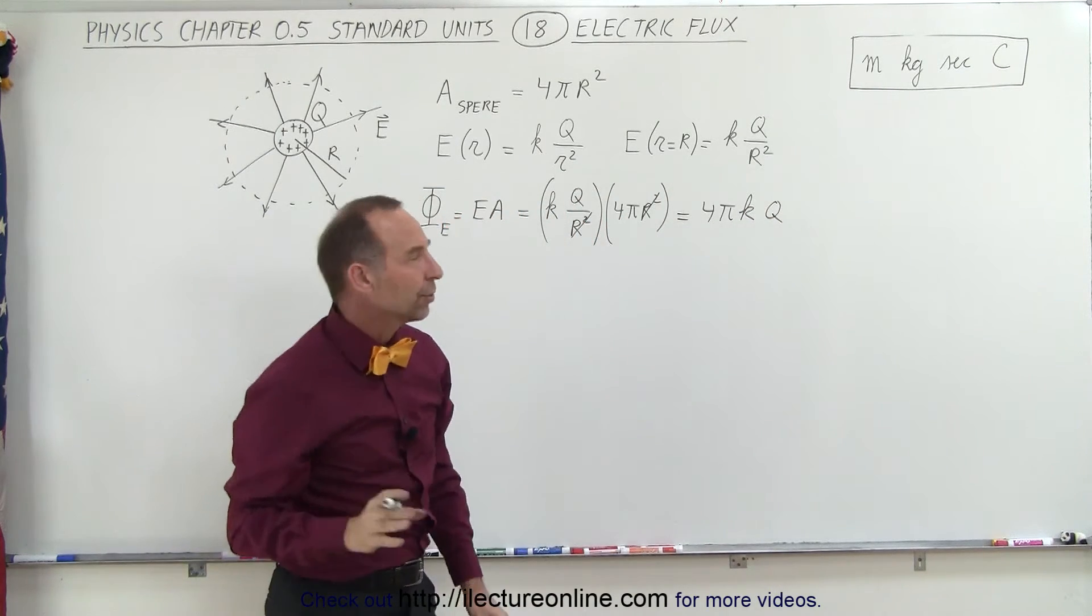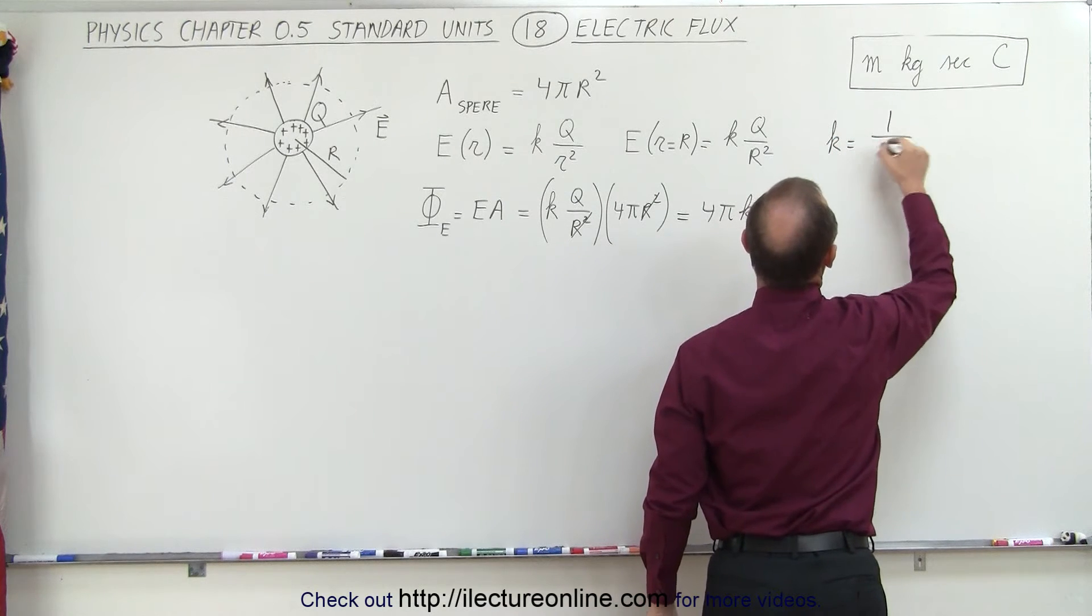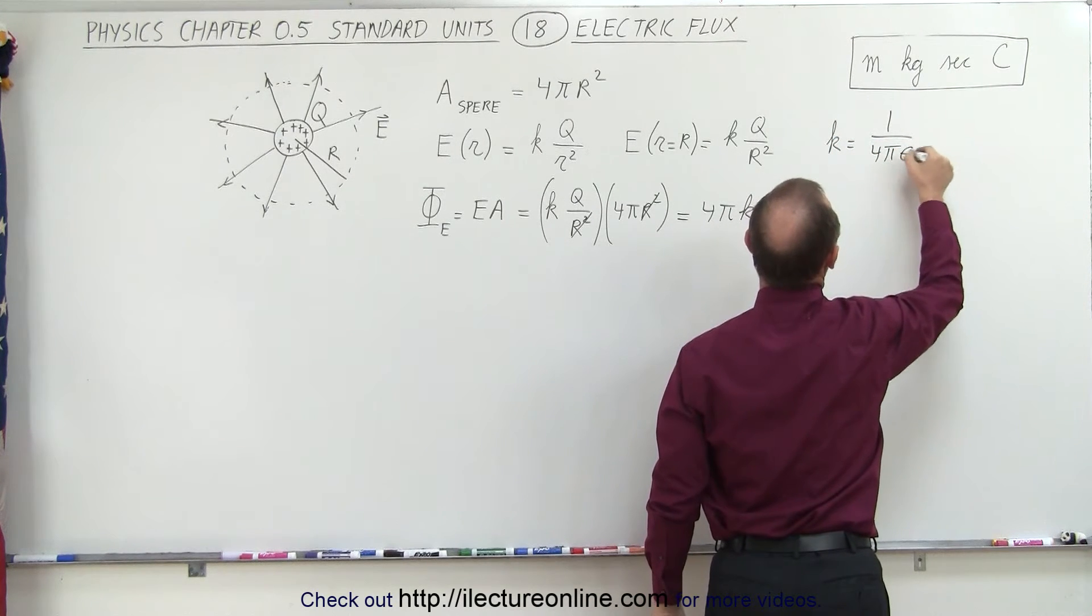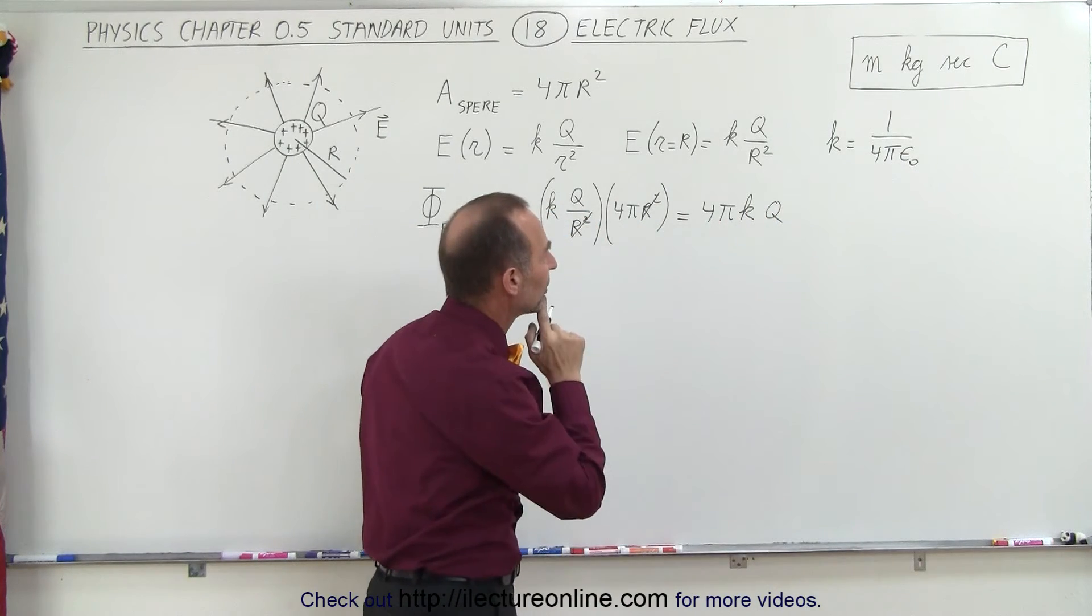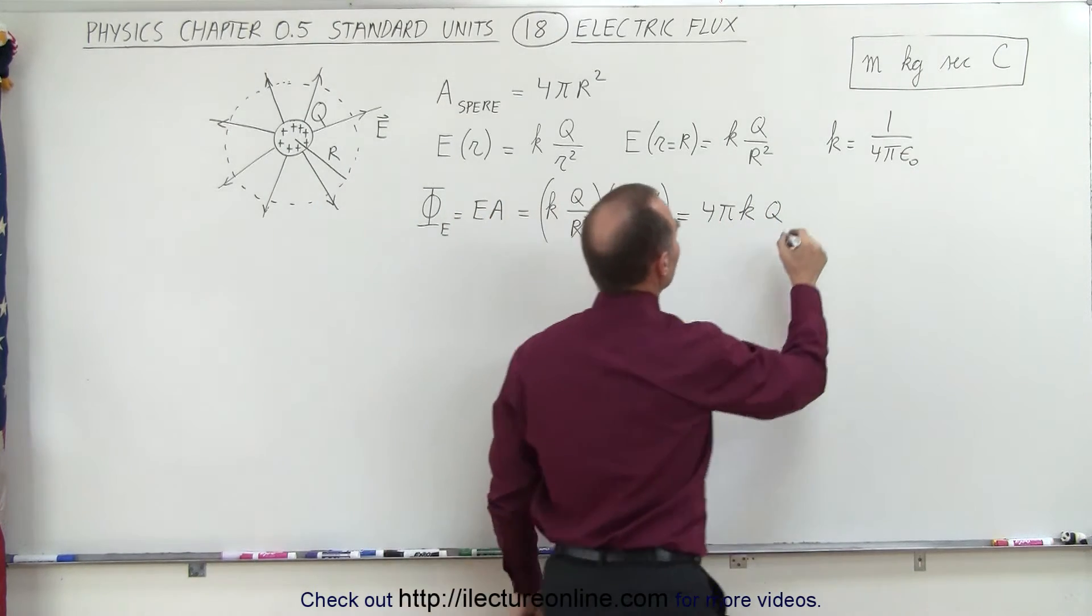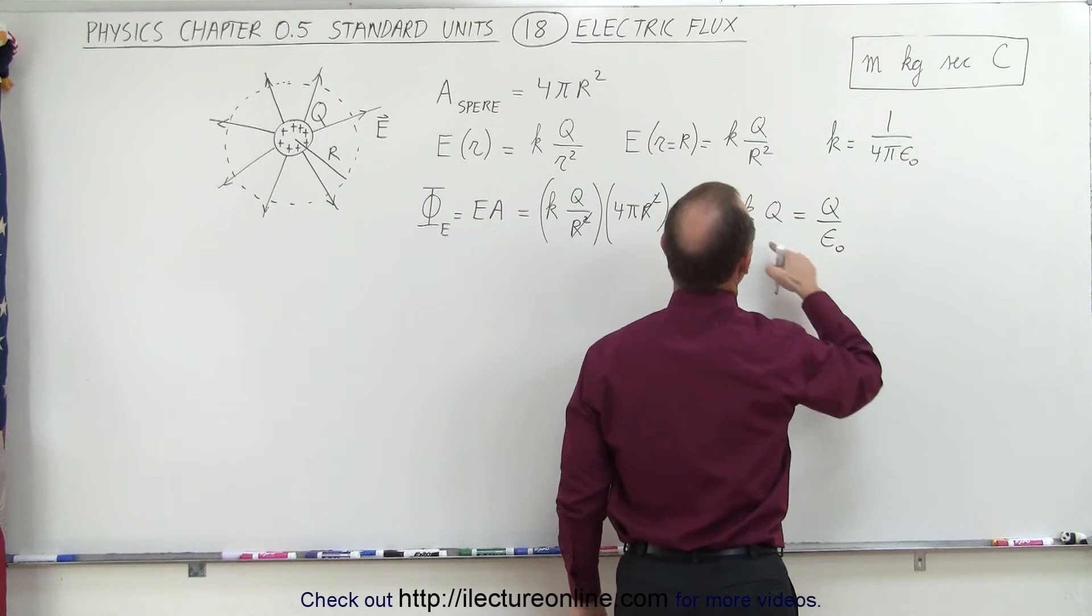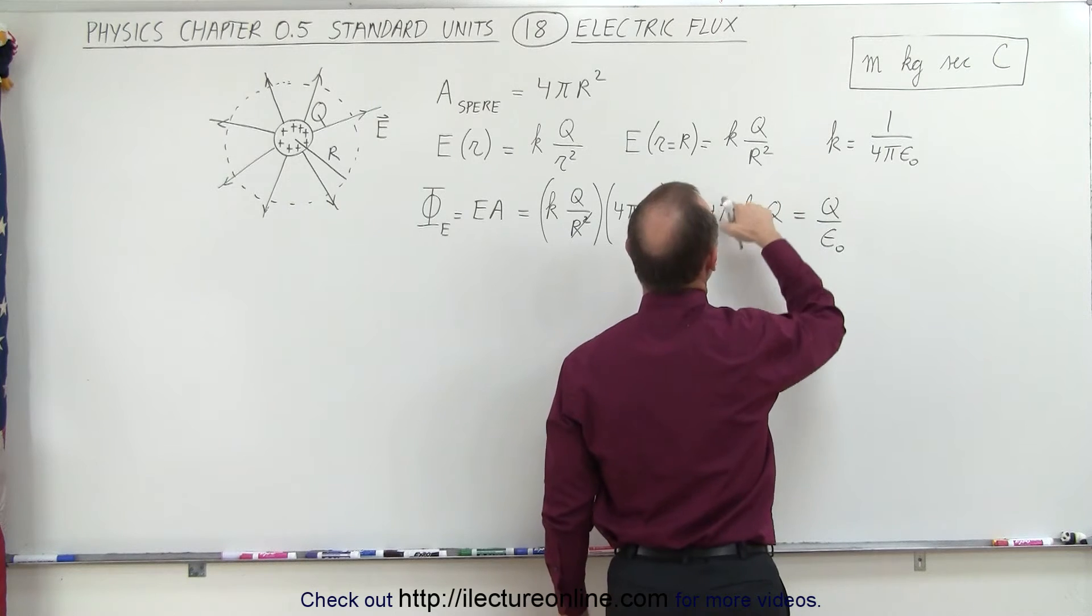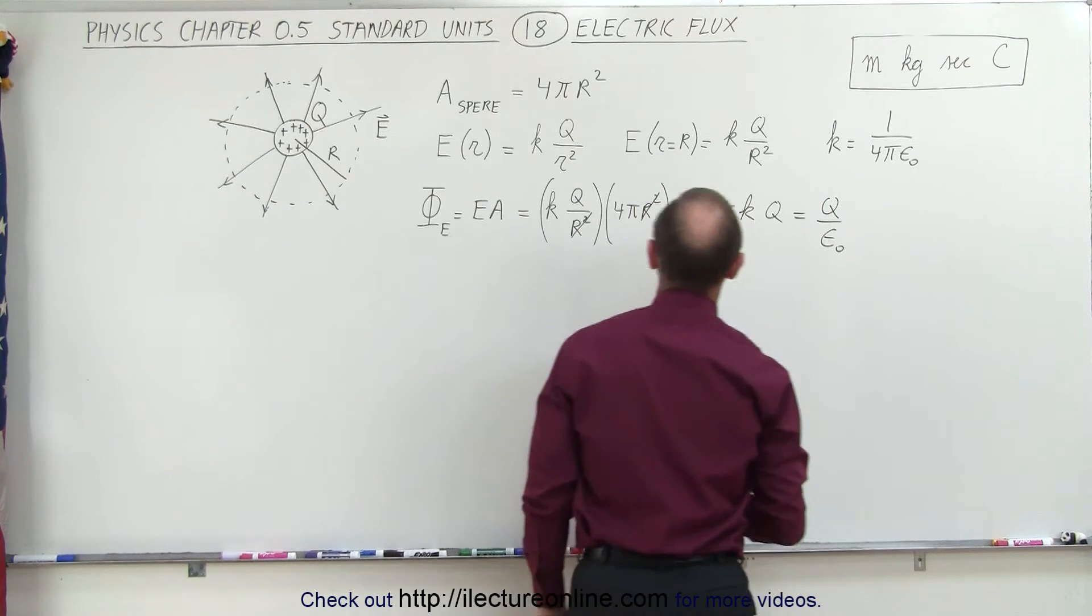Now if we remember that k could also be expressed in terms of 1 over 4π epsilon sub nought, where epsilon sub nought was the permittivity of free space. If we do that, this can then be reduced to q over epsilon sub nought, because k is 1 over 4π epsilon sub nought, so the 4π's cancel, and we're left with epsilon sub nought.